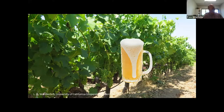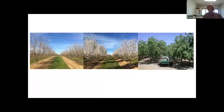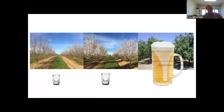In almonds at pink bud, just beginning to bloom, there's not much to hinder air movement — a pretty small glass to fill. At full bloom, it's a bit bigger. But prior to harvest, with very dense canopy weighed down by heavy crop, you need much higher airflow to move through the canopy effectively.